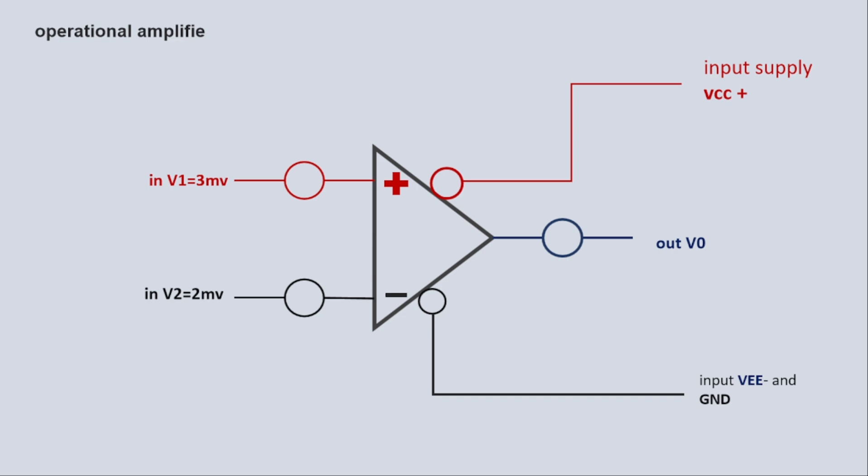Now we see the difference. How much difference is there between V1 and V2? V1 is 3 millivolts, V2 is 2 millivolts. V1 minus V2 equals 1 millivolt. This is the difference.